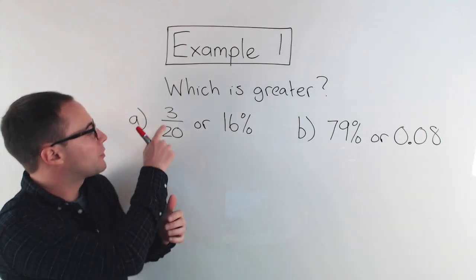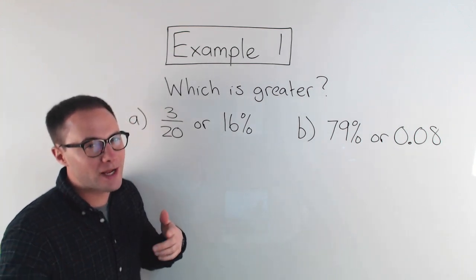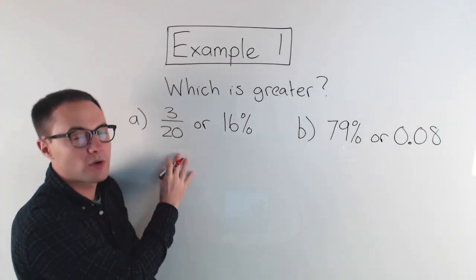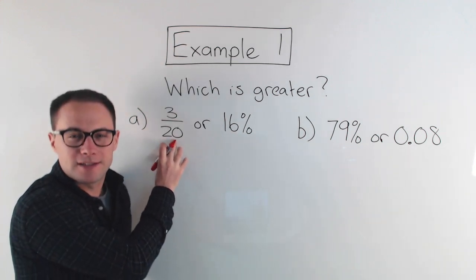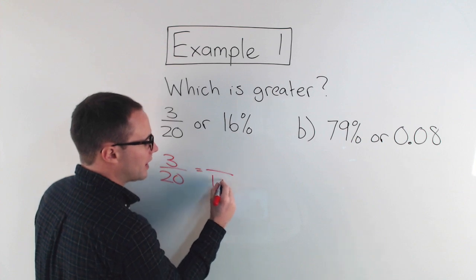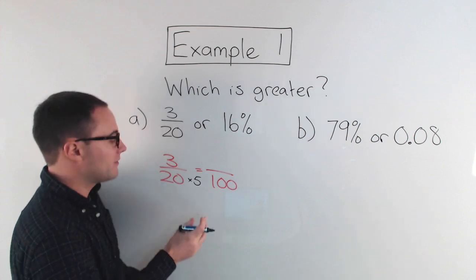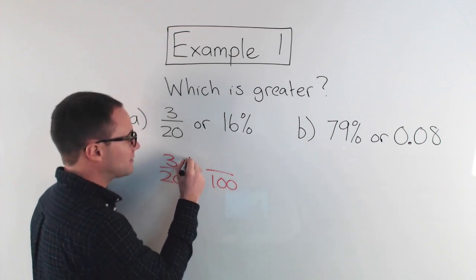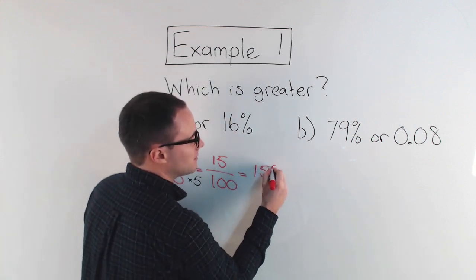So here we go. Part A: three-twentieths or sixteen percent? I think it's going to be easier to make them both percents. Remember, percent means per one hundred, so it'd be great if the denominator were a hundred. Three over twenty — to get a denominator of one hundred, multiply the denominator by five, and do the same to the numerator. That gives us fifteen over a hundred, which is the same as fifteen percent.